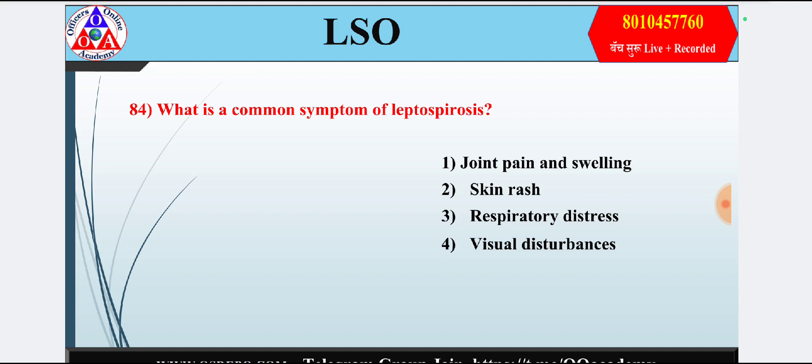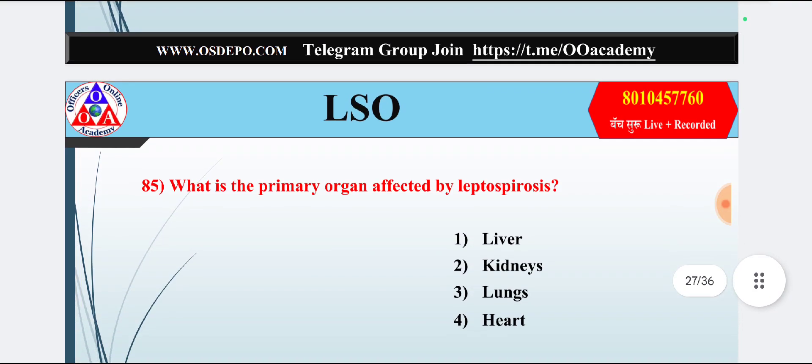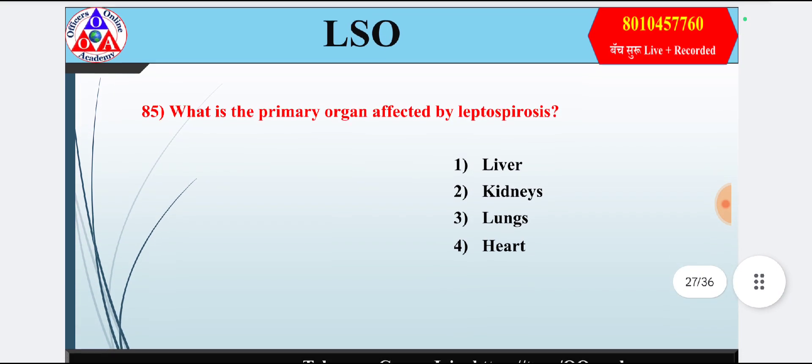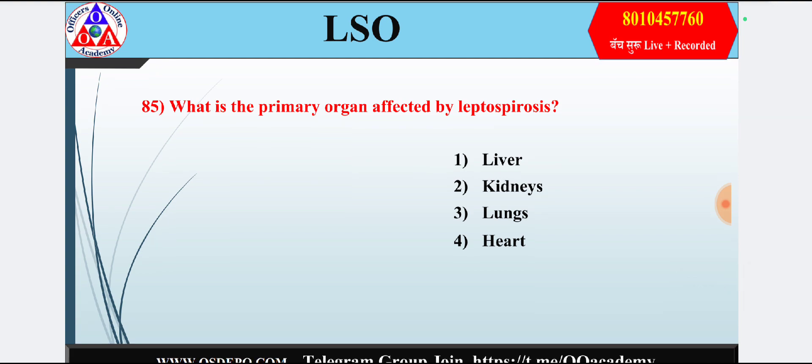Question 24 (revised): What is the primary organ affected by leptospirosis? Option 1: liver; option 2: kidneys; option 3: lungs; option 4: heart. Answer is option 2 — kidneys.